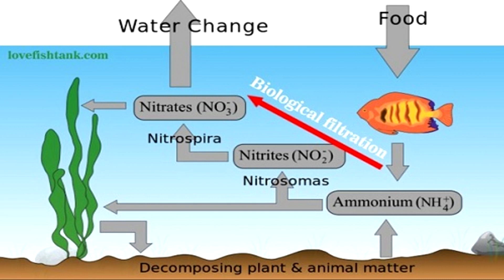Then nitrates are either converted into free nitrogen, which is a gas that will remain in the water, or will be removed by plants or other denitrifying aerobic bacteria. Or they are removed by way of regular water change or chemical absorbance.